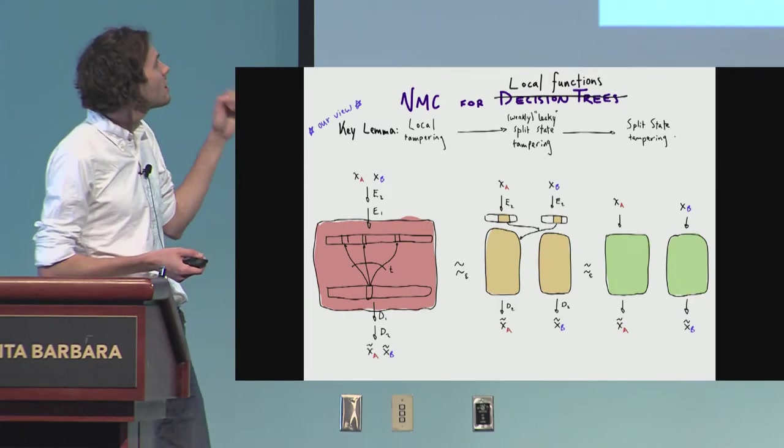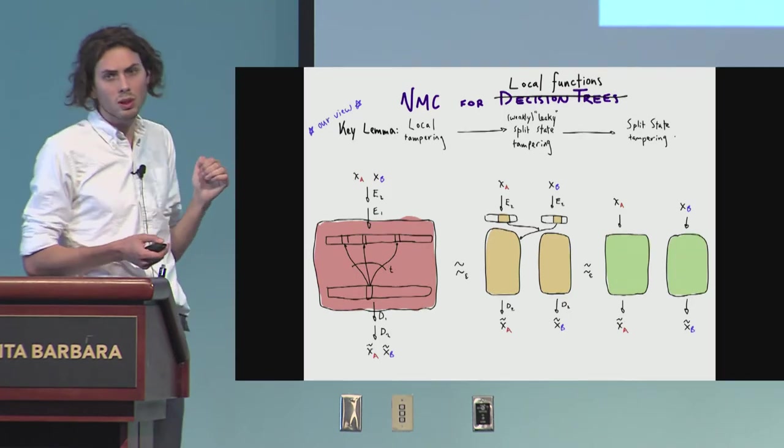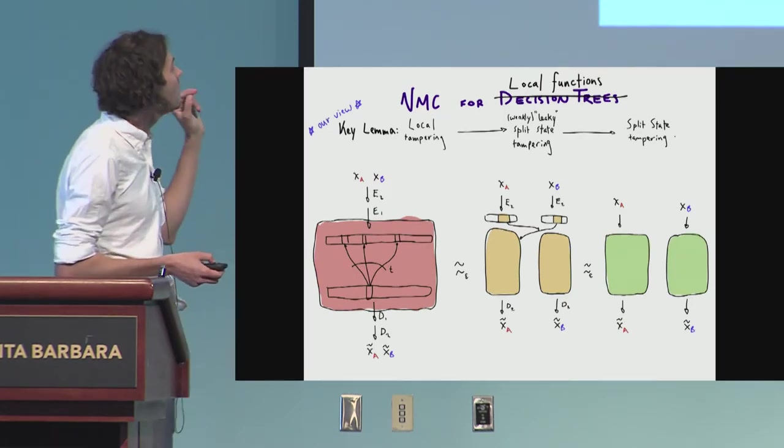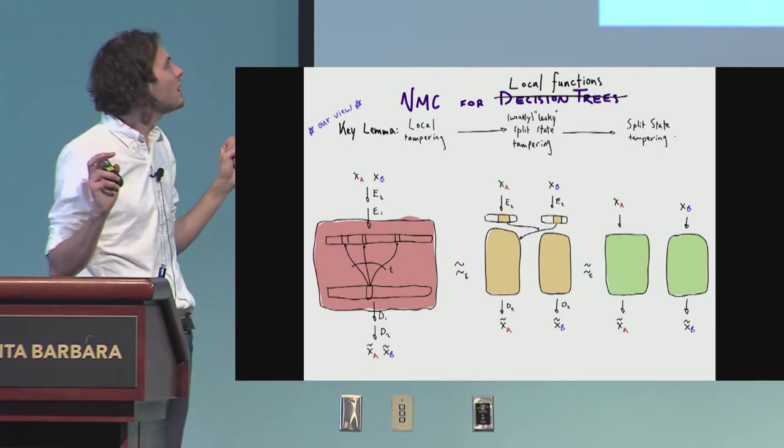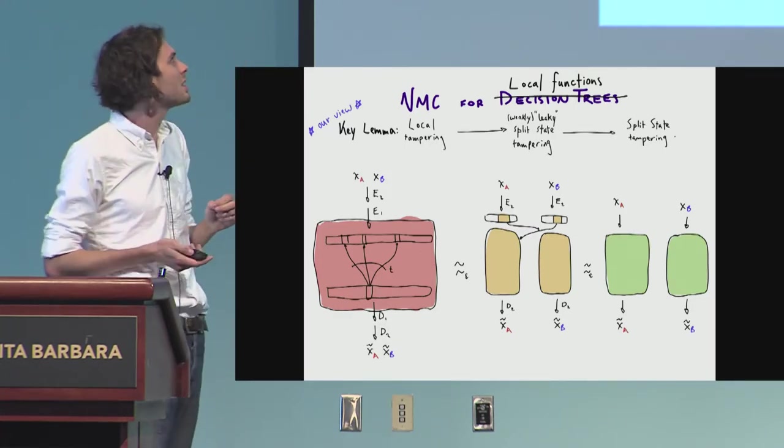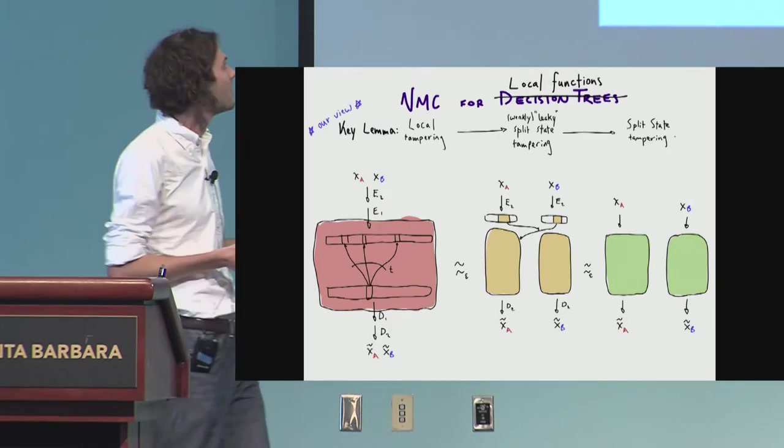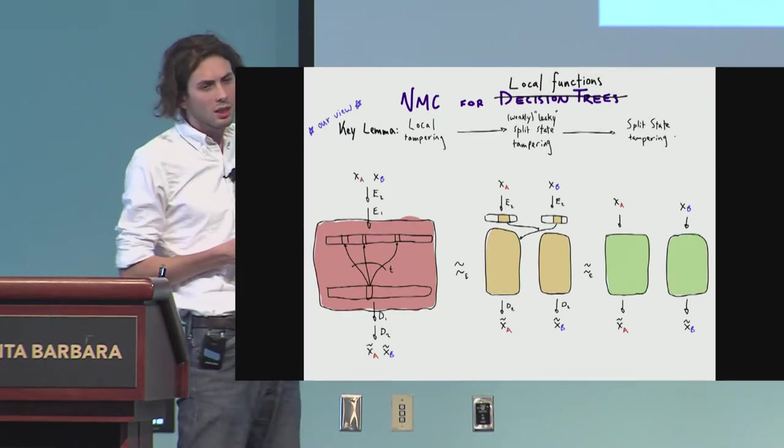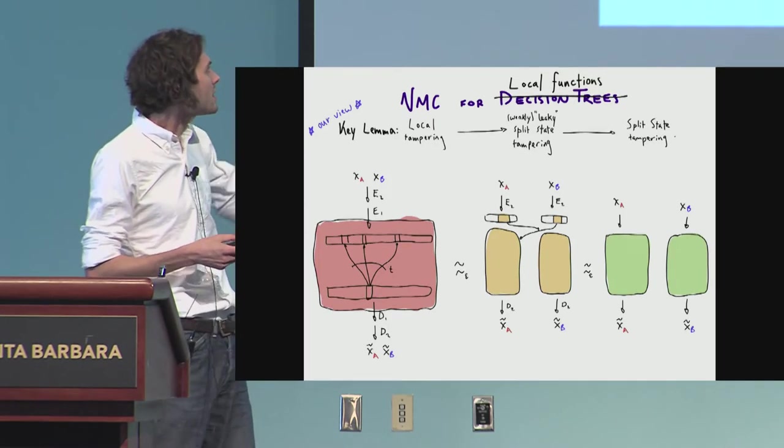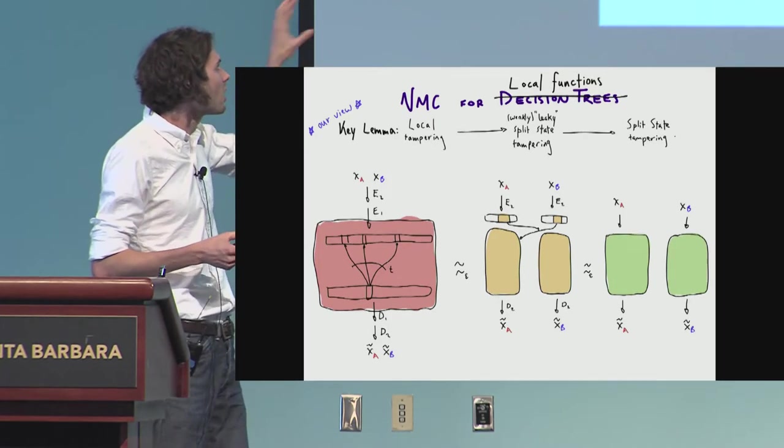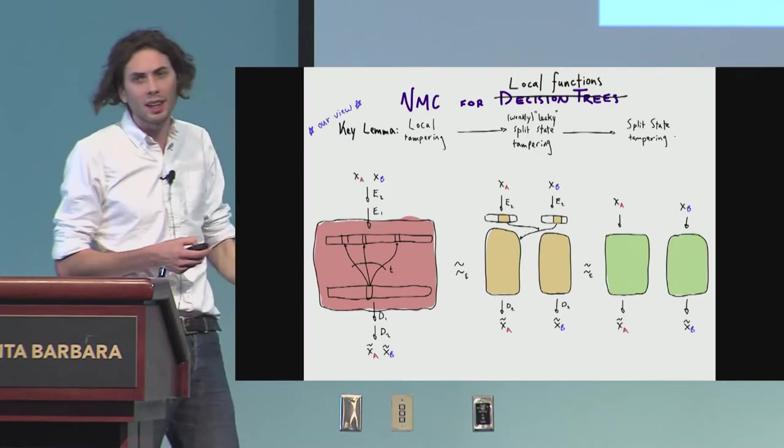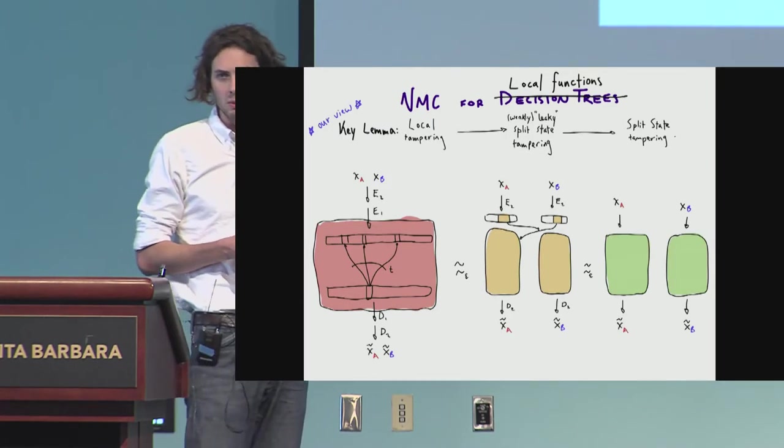We had this two-reduction way of getting to where we wanted to go, and then when we were looking at this, we decided that this was maybe the wrong way of abstracting what was going on. So instead, we introduced this new abstraction, where really we're viewing this code as being the composition of two reductions instead, where you're going from local tampering to what we'll call weakly leaky split-state tampering, and then from there to split-state tampering.